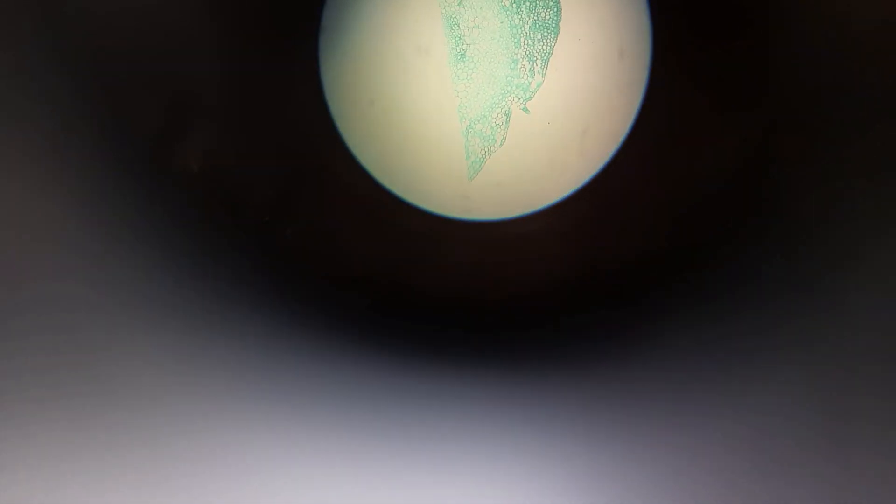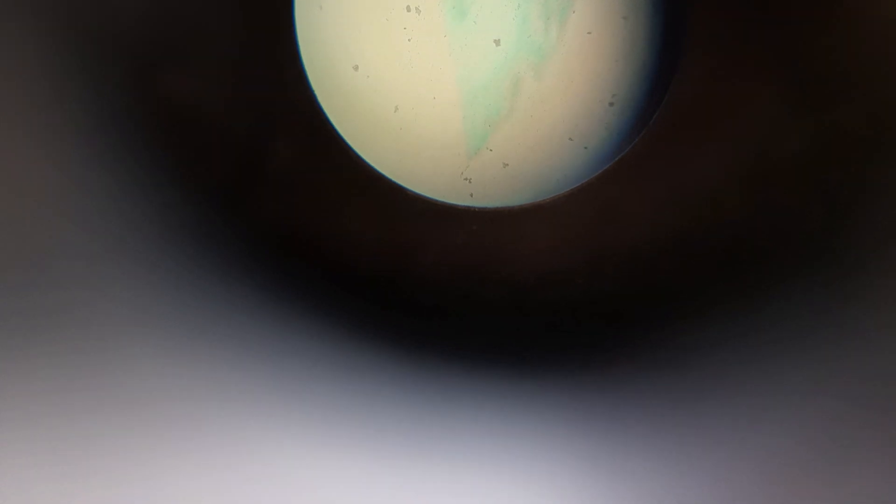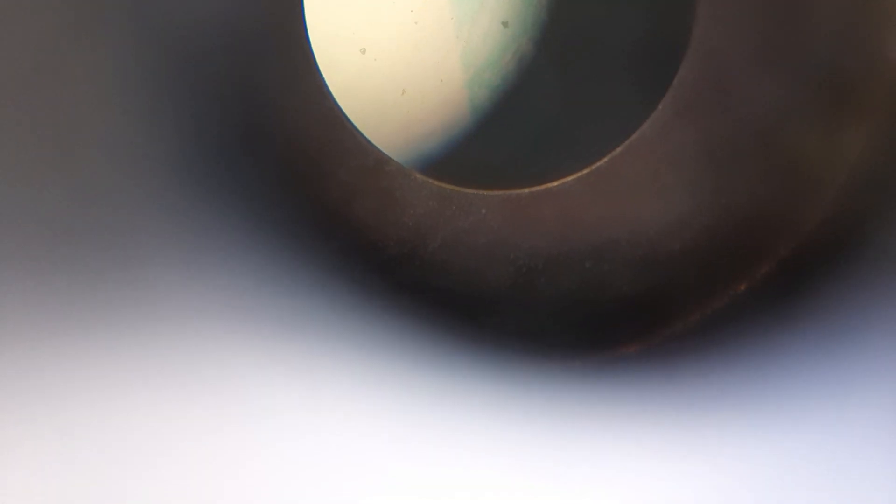Sclerenchyma is a dead tissue because you cannot see protoplasm in this tissue. Only the cell wall is present with a large vacuole, which is actually not functional and is called lumen.